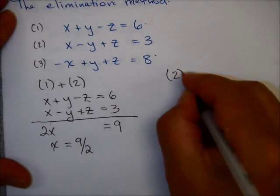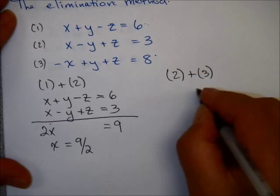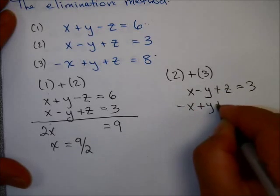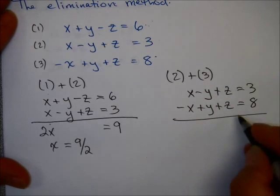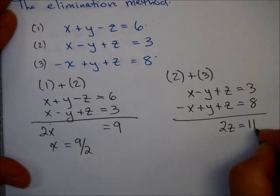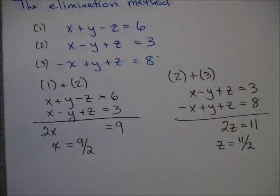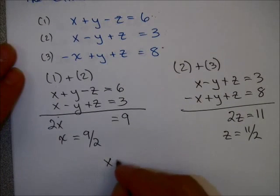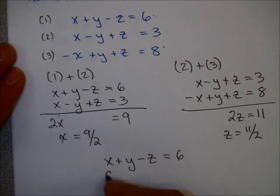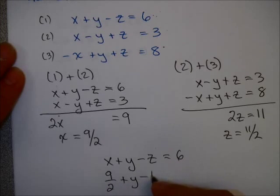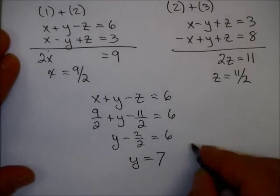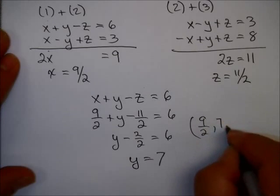Now if I take equation 2 and equation 3 and add them, the x's and y's disappear, and I get 2z equals 11, so z equals 11 halves. To find y, I just replace x and z in one of the equations. Using equation 1 with x being 9 halves and z being 11 halves: 9 halves minus 11 halves is minus 2 halves, or minus 1, so y equals 7. My final solution is (9 halves, 7, 11 halves).